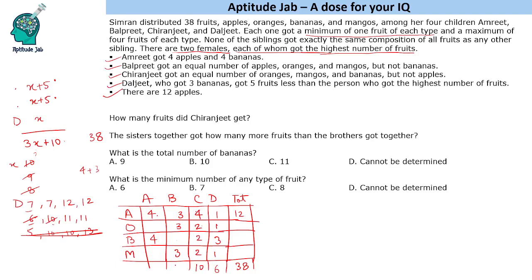So Amrit and Chiranjeet should each total 11. If Amrit's total is 11 with 4 apples and 4 bananas, the remaining two fruits sum to 3, giving possibilities like 1,2 or 2,1 for oranges and mangoes. No other condition restricts these, so both are candidates. Let us now try the other case where Daljeet's total is 7.